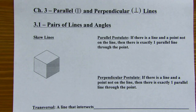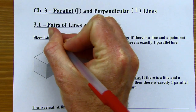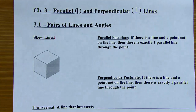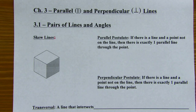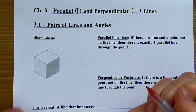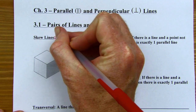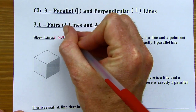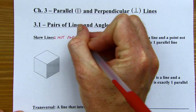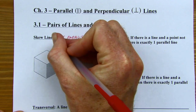I'm going to start off with skew lines, just defining what those are. You might think that lines could either be parallel or they intersect — that seems pretty reasonable, and in two dimensions that's true, but when we move into the third dimension, that's not necessarily the case.